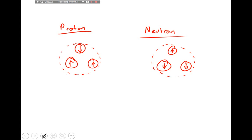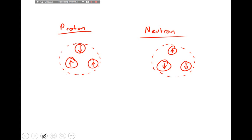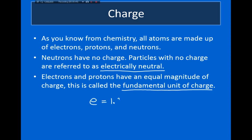As you know from chemistry, all atoms are made up of protons, neutrons, and electrons. Neutrons have no charge, so objects with no charge are referred to as electrically neutral. Protons and electrons have equal and opposite charges — a proton has a positive charge and an electron has a negative charge. The magnitude of these charges is called the fundamental unit of charge, denoted by lowercase e, equal to 1.6 × 10⁻¹⁹ coulombs.